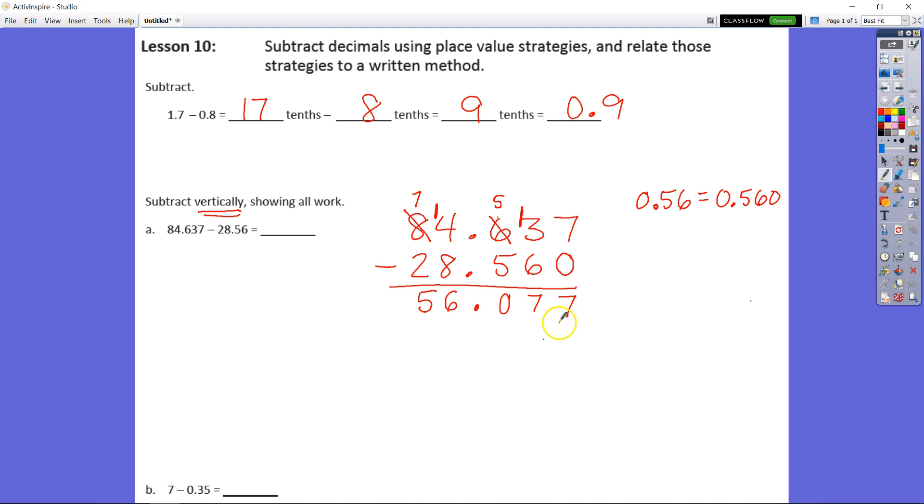Students, if you get confused remember you say this number as if the decimal isn't there, 77, and then look at what place value this last digit is in, thousandths. So 56 and the decimal says and 77 thousandths.